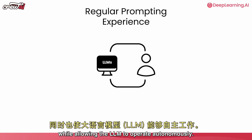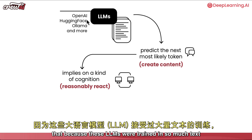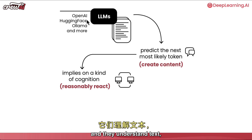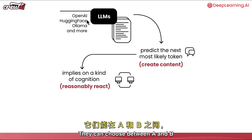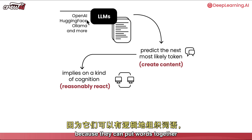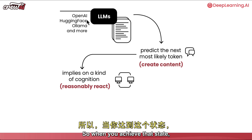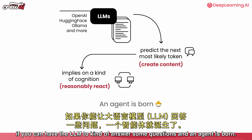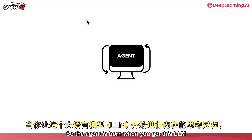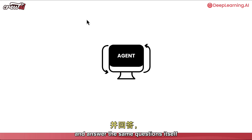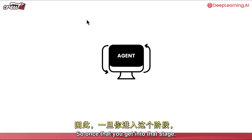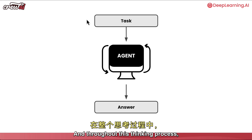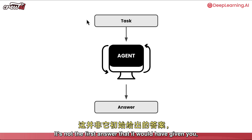AI agents can break that cycle and allow you to do other work while letting the LLM operate autonomously. The reason we can do that is because these LLMs were trained on so much text that they create a state where they kind of have cognition - they can reasonably react, choose between A and B, left and right, because they can put words together in a way that makes sense. An agent is born when you get the LLM to engage in a thinking process, asking questions and answering them itself, until it can move on and improve by itself.